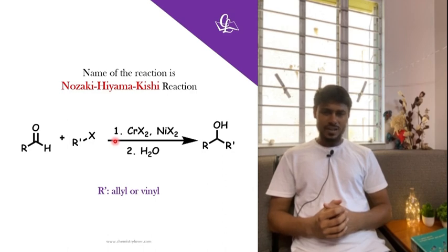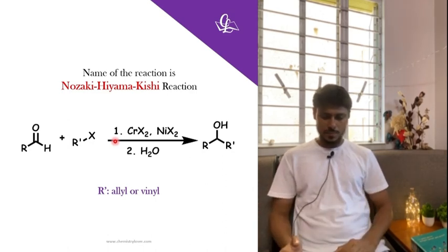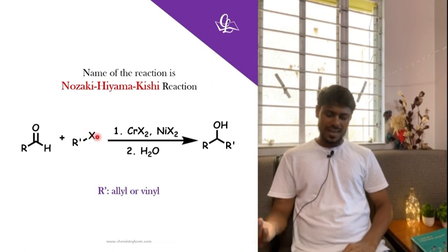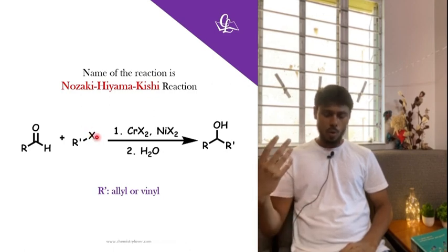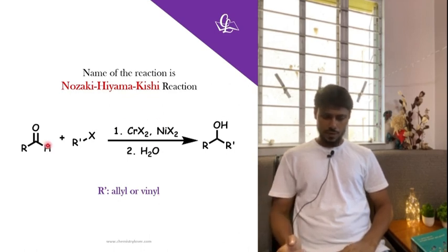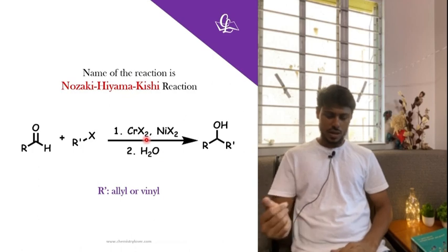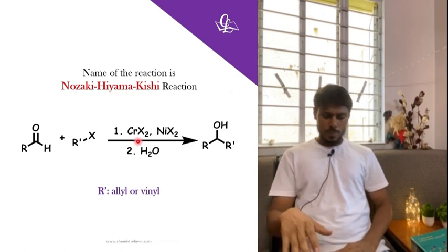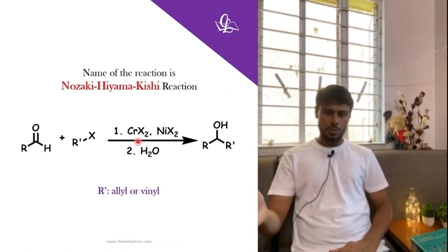The name of the reaction is the Nozaki-Hiyama-Kishi reaction. In this reaction, the aldehyde reacts with an alkyl halide — or it may be some other leaving group such as OTf or OTs. The important thing is that the R-prime group must be an allyl group or vinyl group. When these two components react in the presence of chromium chloride and nickel — which may be chloride or bromide — you need Cr(II) and Ni(II) species, and you will get the coupling product.